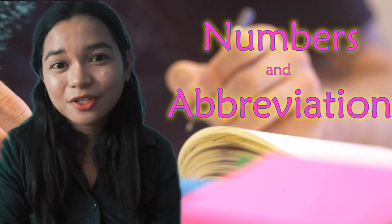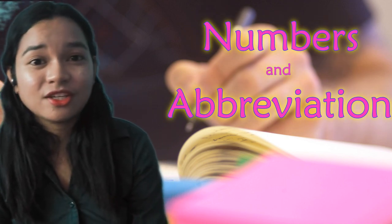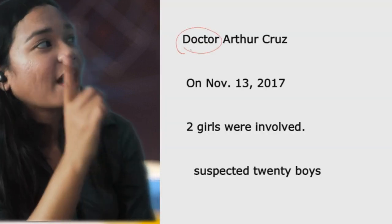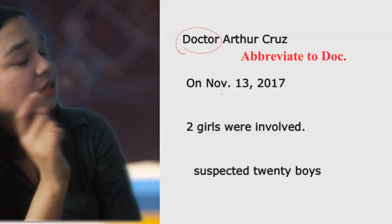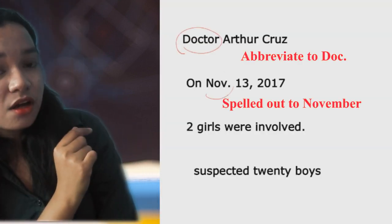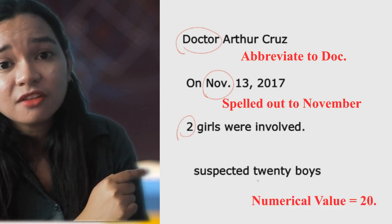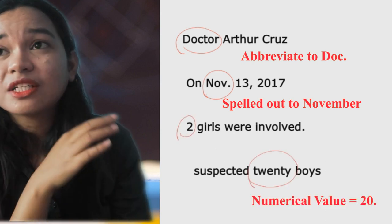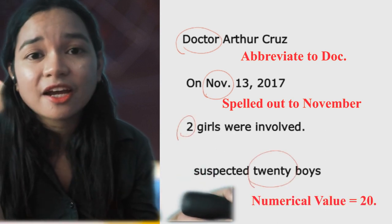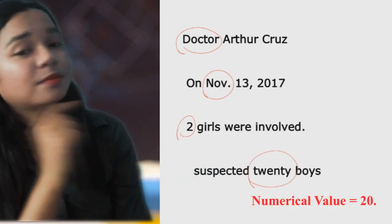Second one, numbers and abbreviations. We only use one symbol and that is the circle. If you want to abbreviate, spell it out, or just put the numerical value or spell the entire number, then place a circle.